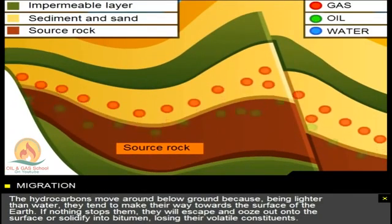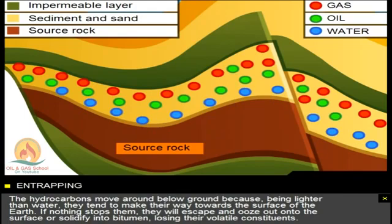The hydrocarbons move around below ground because, being lighter than water, they tend to make their way towards the surface of the Earth.